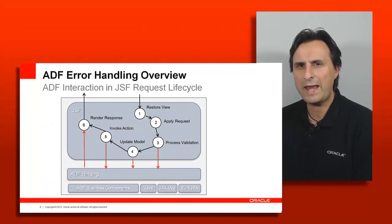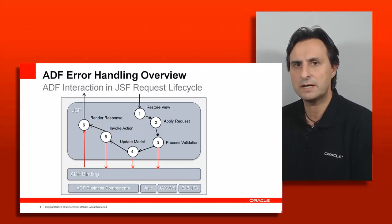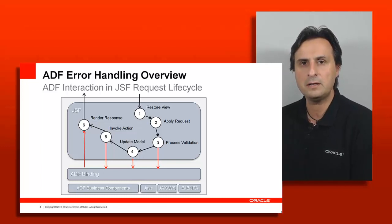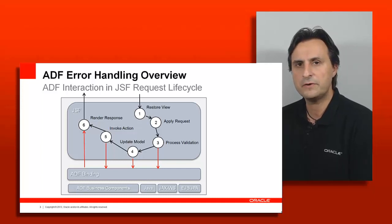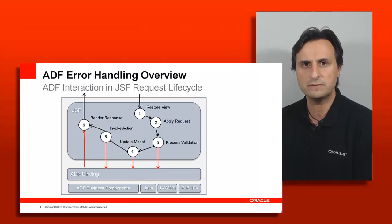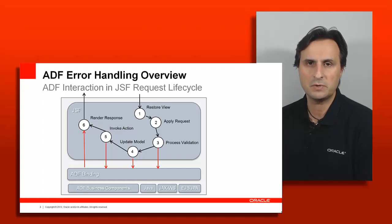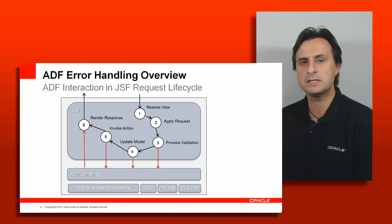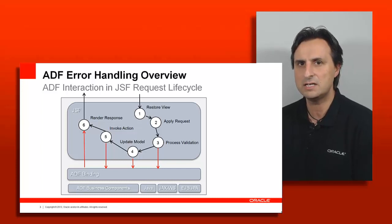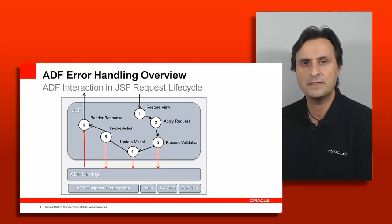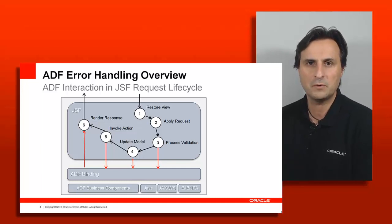Let's look at when in the process of a request errors could happen. In the JSF lifecycle we have six steps, and after the first step — restore view — the binding context is set up and ADF becomes available. The first time we actively use the framework is during process validation, because when you look at page sources generated from dragging from the data control palette, you see the f:validate tag pointing to the binding layer, checking for required fields and length validation. This is the first time things can go wrong.